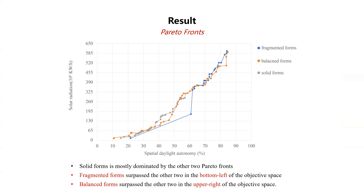This means these designs can achieve quite similar performance in terms of daylighting and reducing solar heating. However, we can see that for the fragmented form, most designs are on the upper right part of the objective space, indicating good daylighting performance. For the solid form, designs are on the bottom left side, indicating they are good at reducing solar heating. We can also notice that the balanced form has a longer spread, meaning designs with this form characteristic are the most flexible and can be combined with different facade schemes to achieve different trade-offs between daylighting and reduced solar heating.